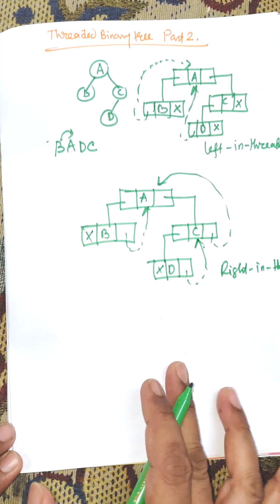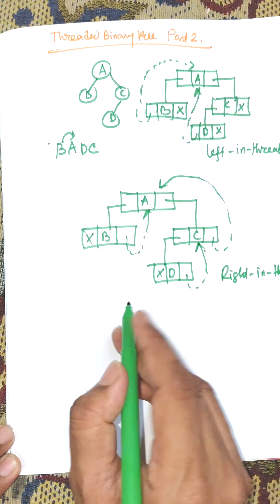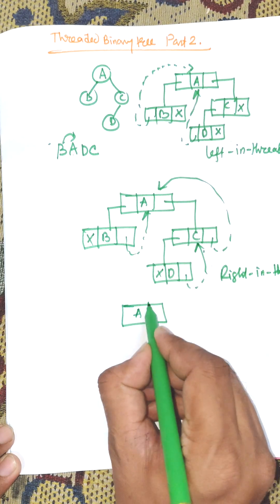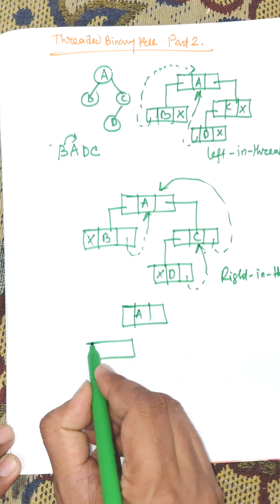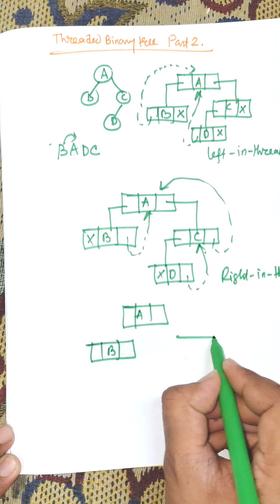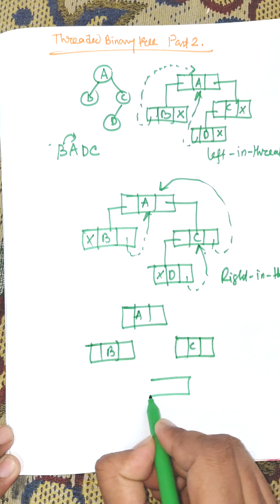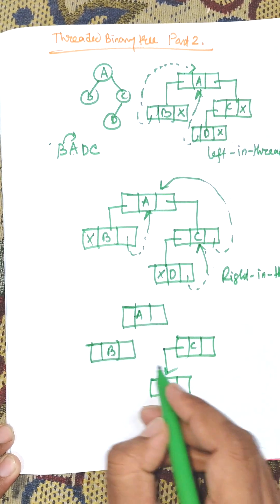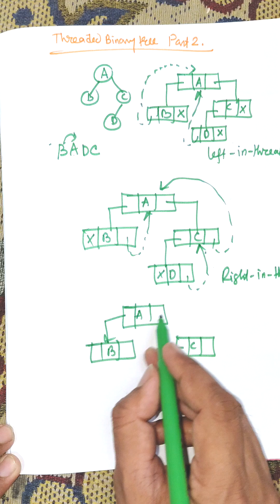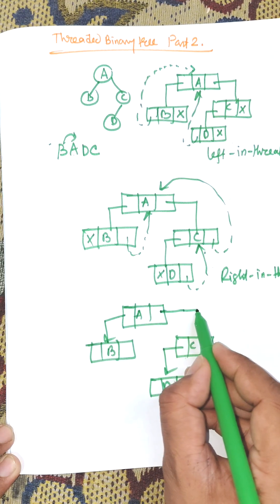The last type is both threaded, which means we can use left-in threaded and right-in threaded simultaneously. Consider nodes A, B, C, and D where the tree structure is set up with both left and right pointer connections.